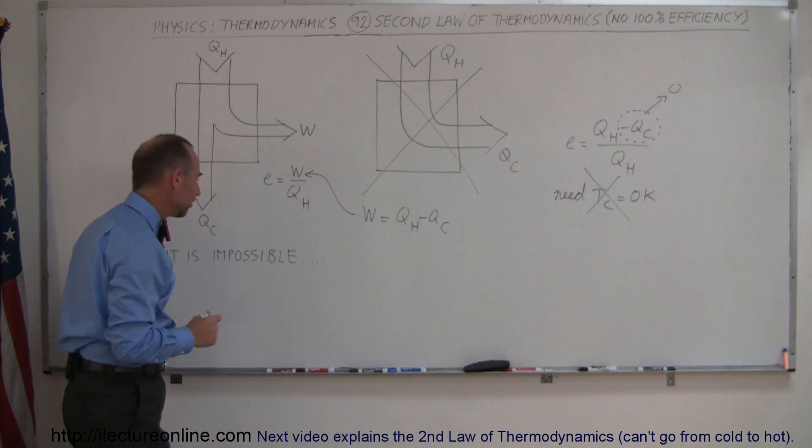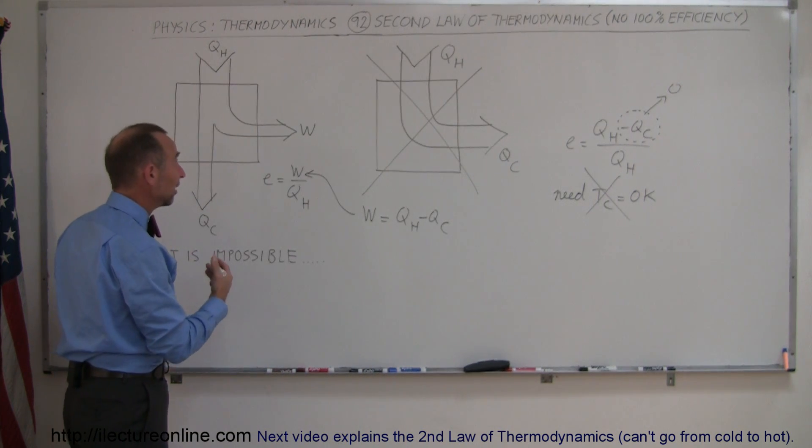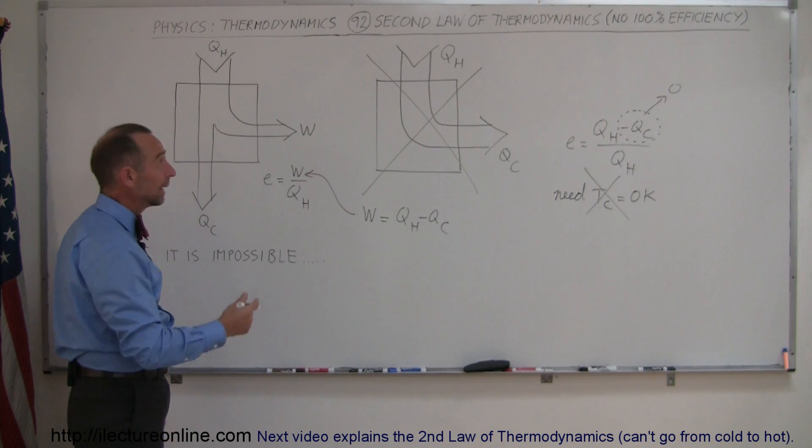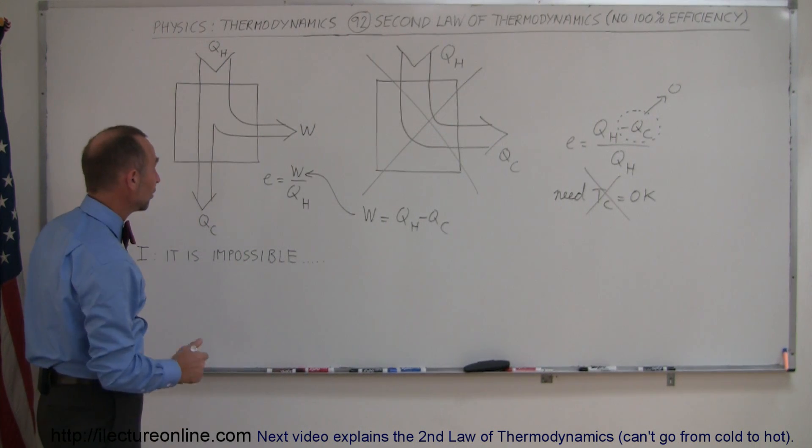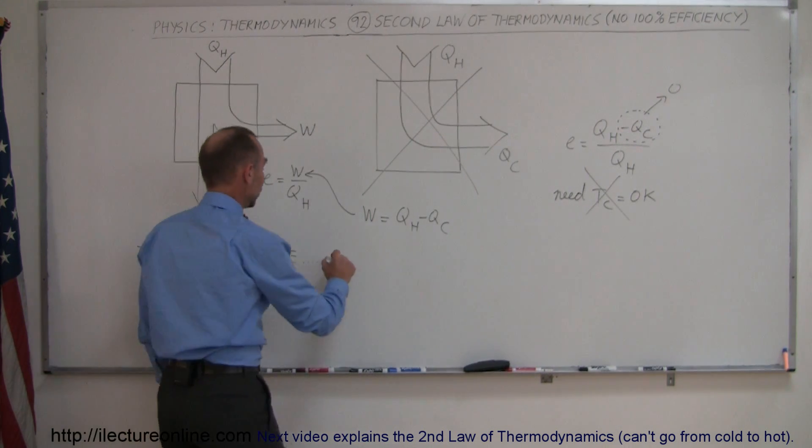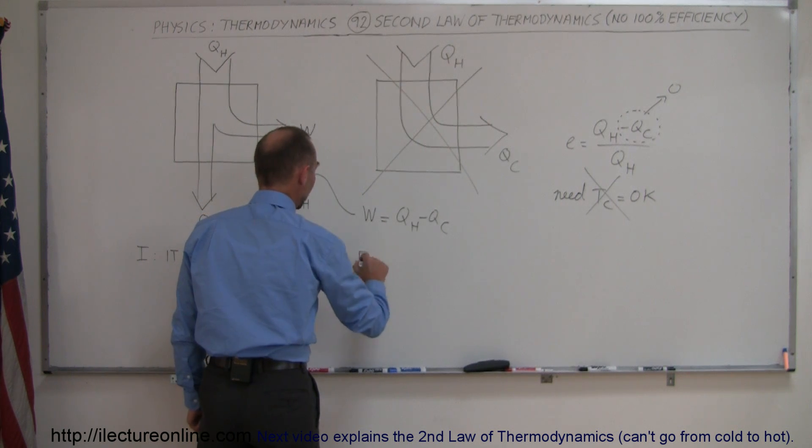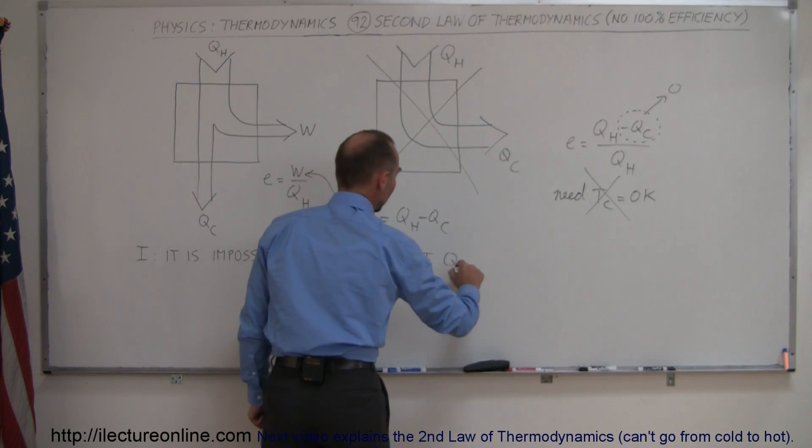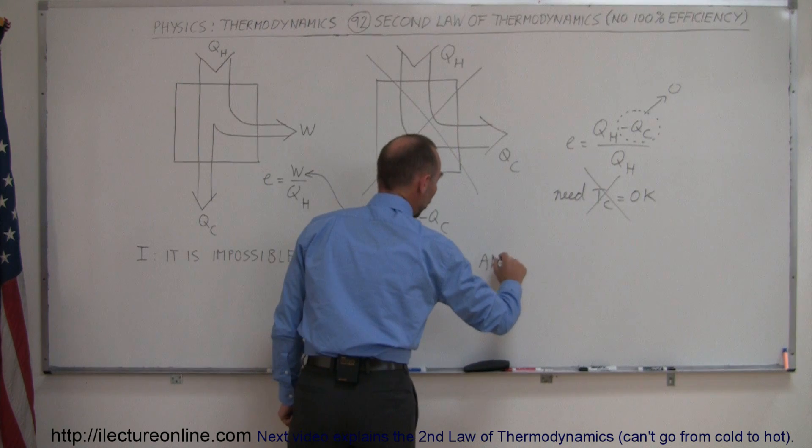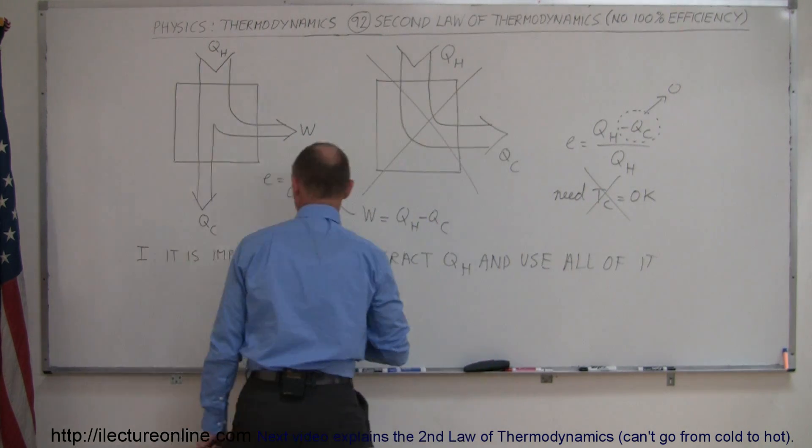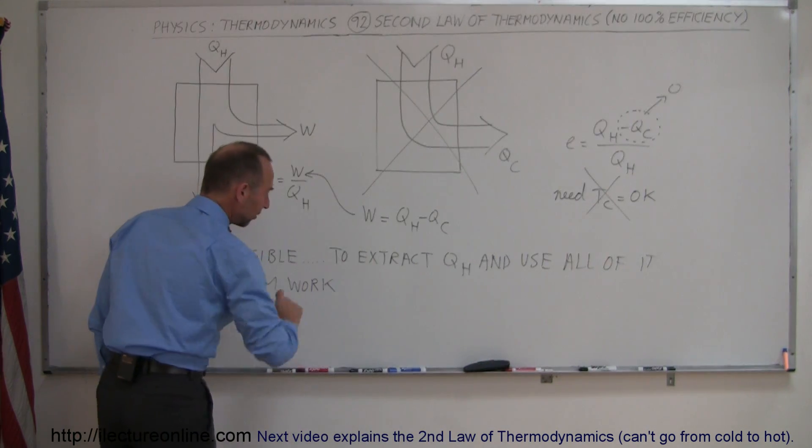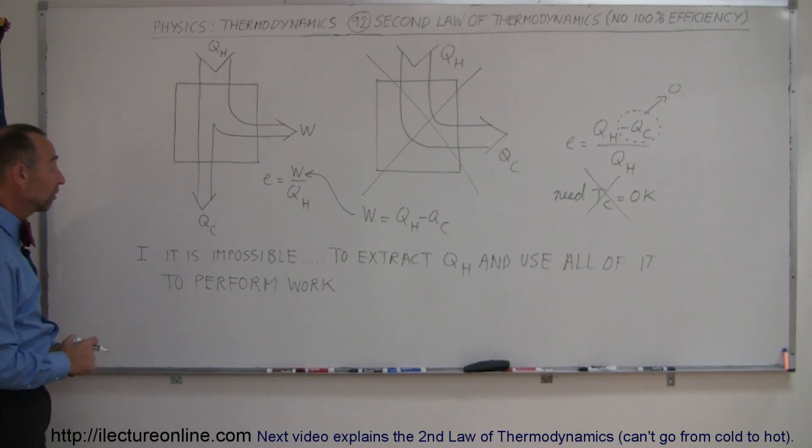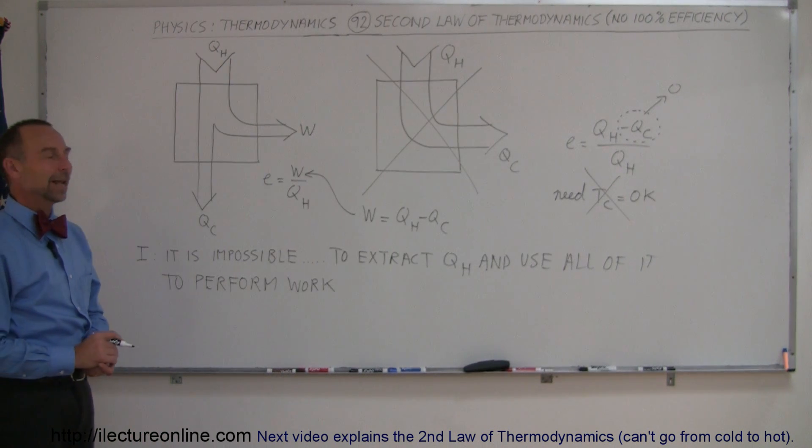So the best way to express the second law of thermodynamics in the case of looking at it in terms of efficiency is to say that it is impossible to extract Q hot and use all of it to perform work. And that, simply stated, is one way to express the second law of thermodynamics.